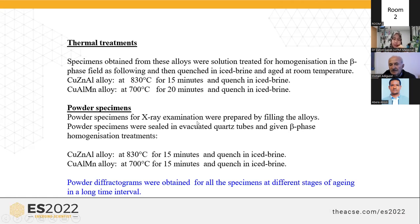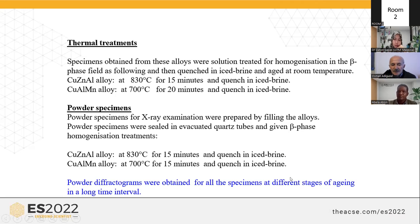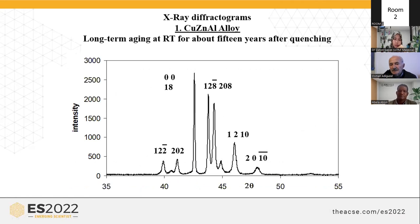Powder specimens for X-ray examination were prepared by filing the alloys, and the specimens were sealed in evacuated quartz tubes and given beta phase homogenization treatments to release strain effects and other imperfections. These temperatures were also selected at 830°C and 700°C, with a homogenization time of 15 minutes. Powder X-ray diffractions were obtained for all specimens at different stages of aging over a long time interval. This is an X-ray diffractogram taken from a copper-zinc-aluminum alloy sample after long-term aging at room temperature for about 15 years after quenching.